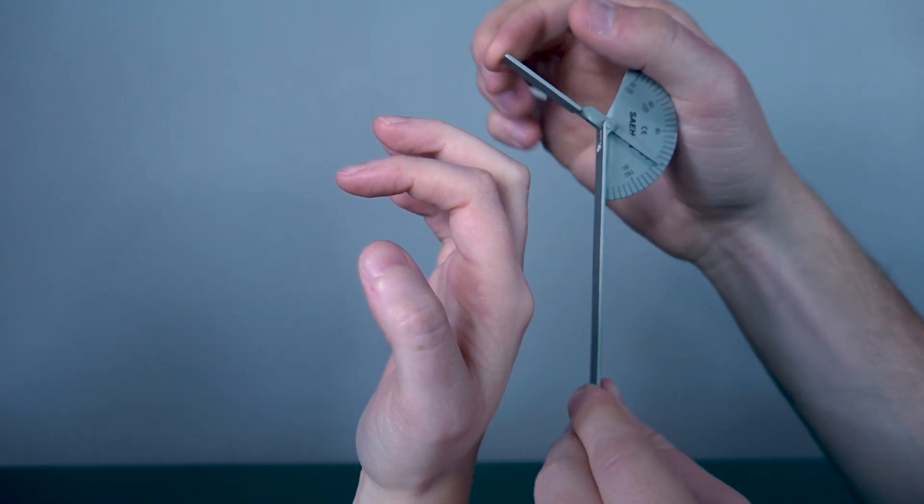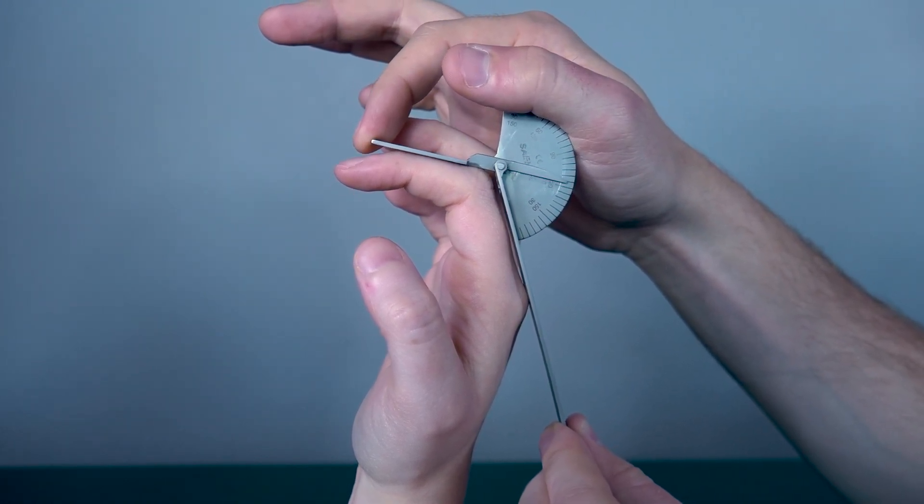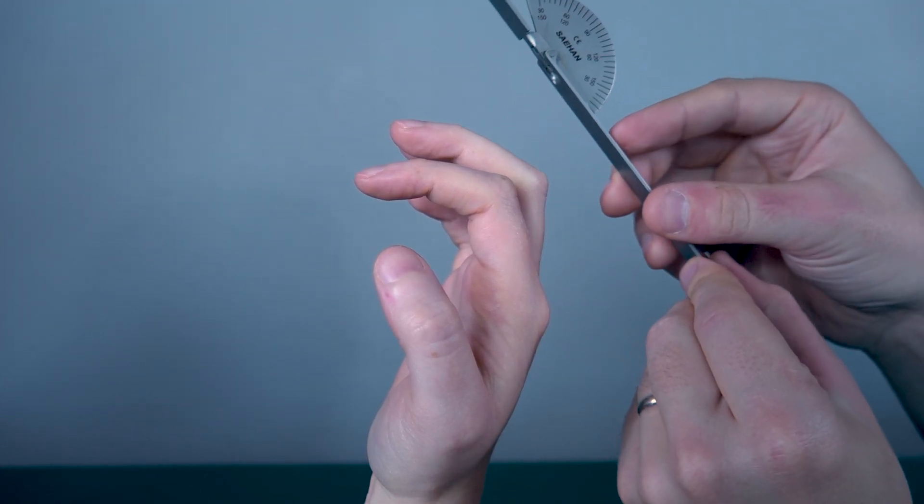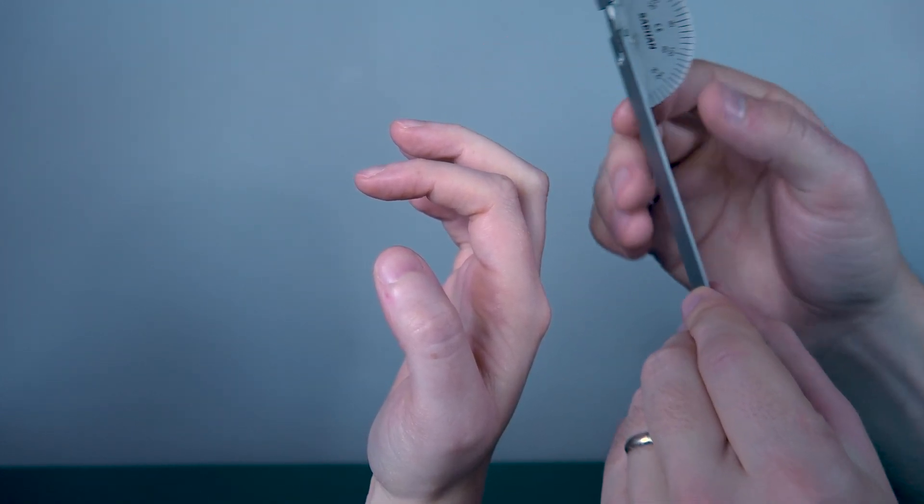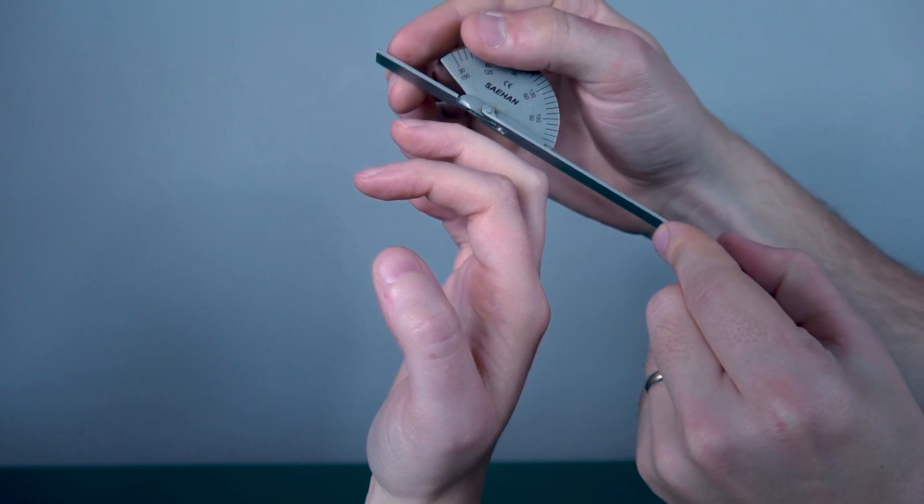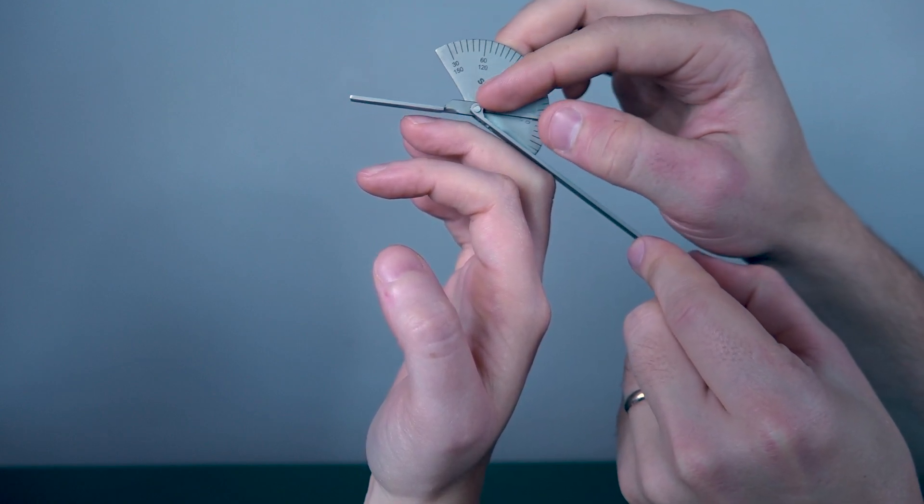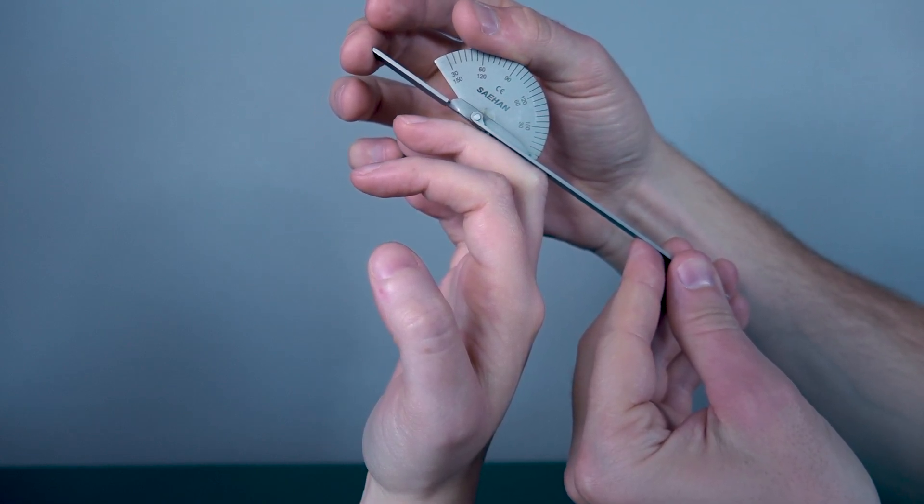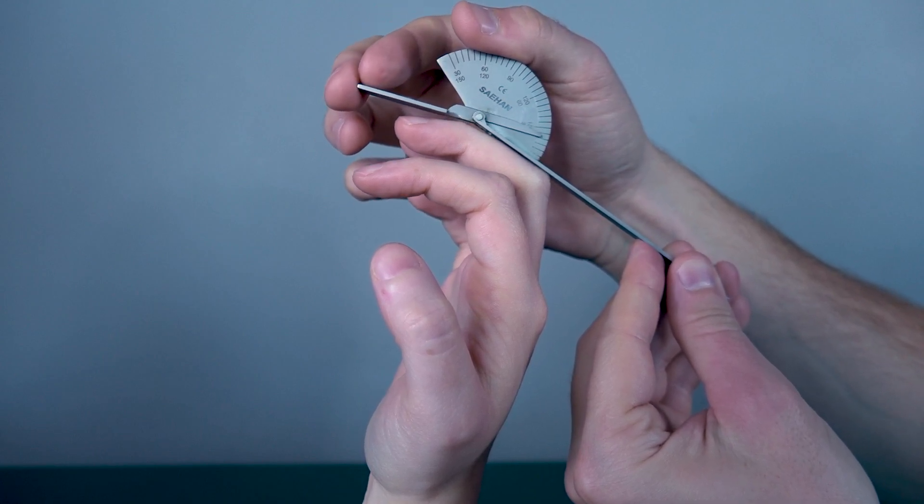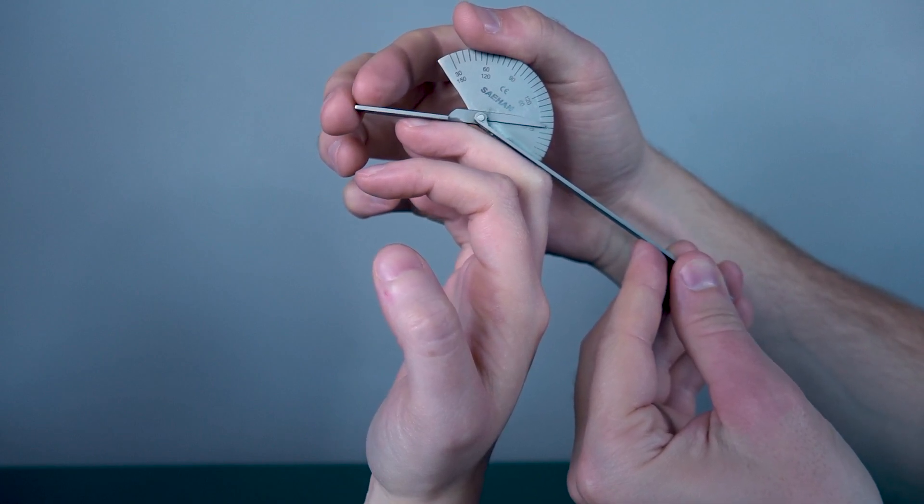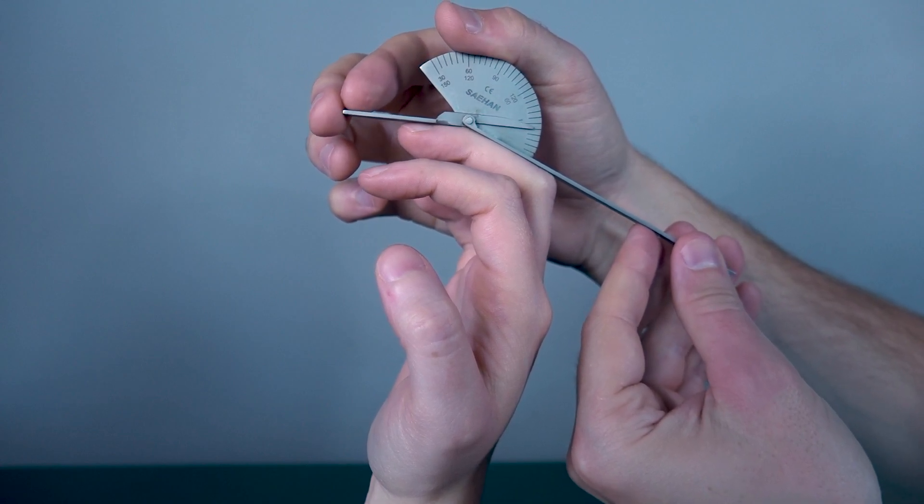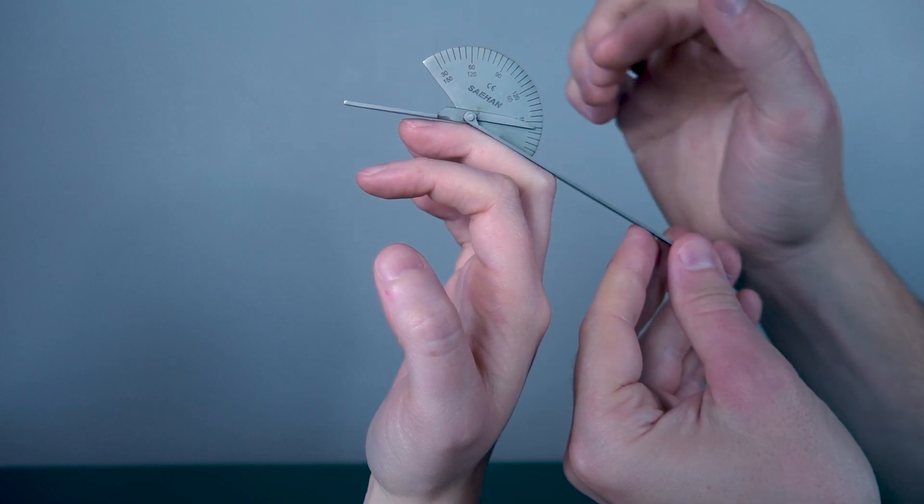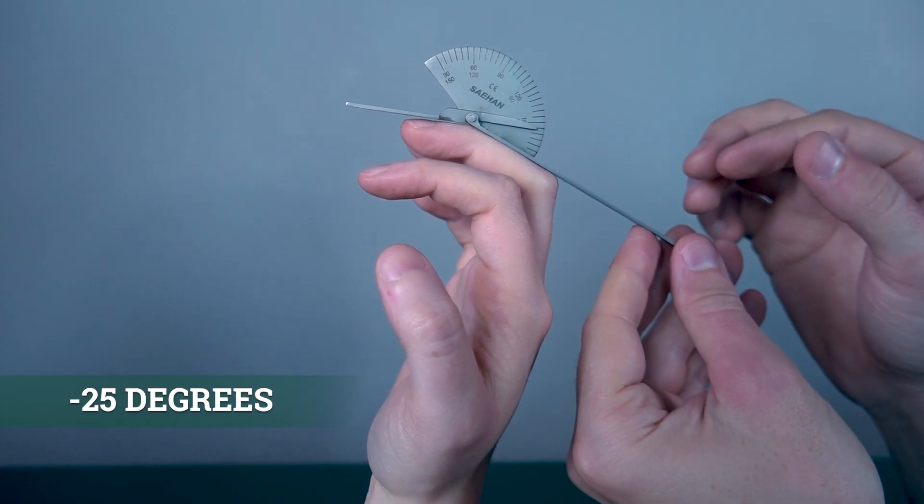You will do that for all of her PIP joints to test for extension. Same thing for the DIP, except instead of putting it on the proximal, we put it on the middle and the distal. Middle, distal, axis on the DIP. We want to see how much she's lacking. It's supposed to be up here but it's down here instead, so we're looking at about 25 degrees she's lacking of extension. That would be considered negative 25 degrees of extension.